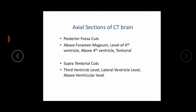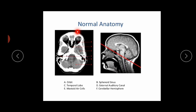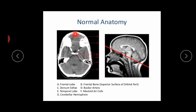This is the normal anatomy of the head on CT scan. We can see the orbits, then the sphenoid sinus, then the temporal lobe, the external auditory canal, the mastoid air cells, and the cerebral hemisphere.